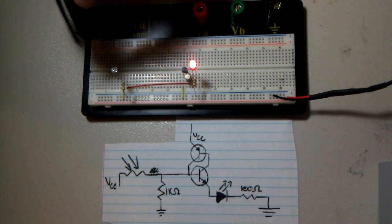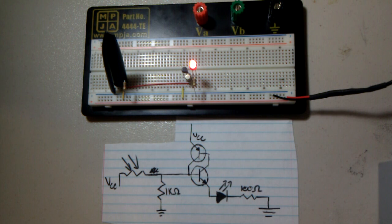Now when you cover the photoresistor again, the voltage of the input pin drops, but the thyristor is keeping itself powered, so the LED will stay on.